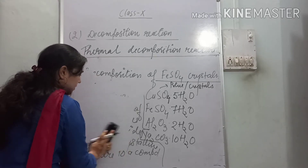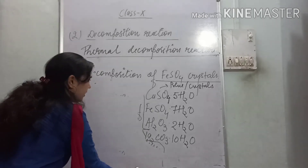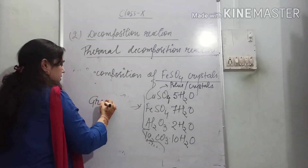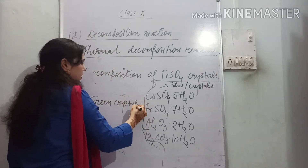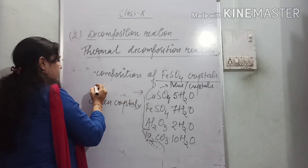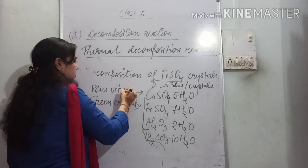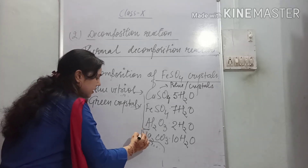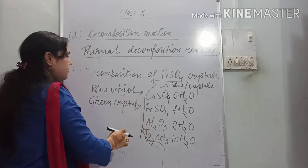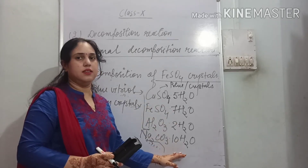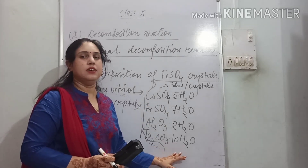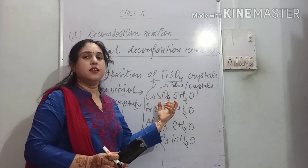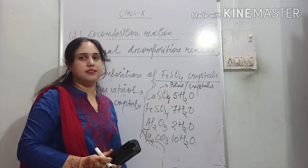So here we have examples: copper sulfate has blue crystals due to its water of crystallization, and iron sulfate (FeSO4) has green crystals. These are examples of water of crystallization — meaning in any compound, it gives a particular color and crystal form, which is due to the presence of water of crystallization.